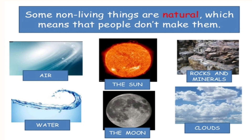Some non-living things are natural. When we say natural, people cannot make them. An example is the air, the sun, rocks and minerals, the water, the moon, and the clouds. They are non-living things even though they are natural.